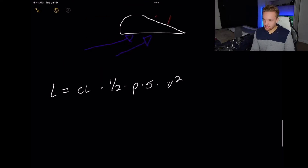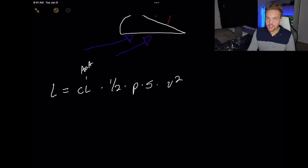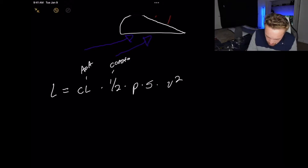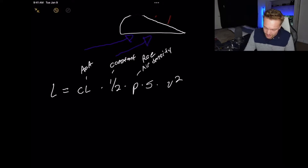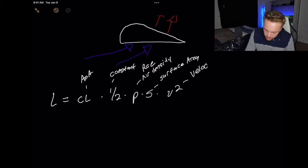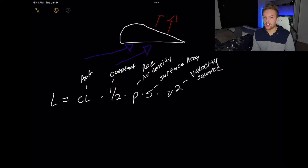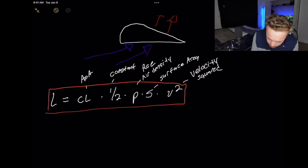So the coefficient of lift — what is this? Coefficient of lift: angle of attack. We'll get to that, but we're just breaking it down. The one half we call a constant, and this constant is just what we need to make the equation work. Next we have rho, and rho is Greek for air density. S is surface area. And V² is velocity squared. We're going to come back to velocity squared — that is by far the most important variable, but we have this as our primary lift equation.